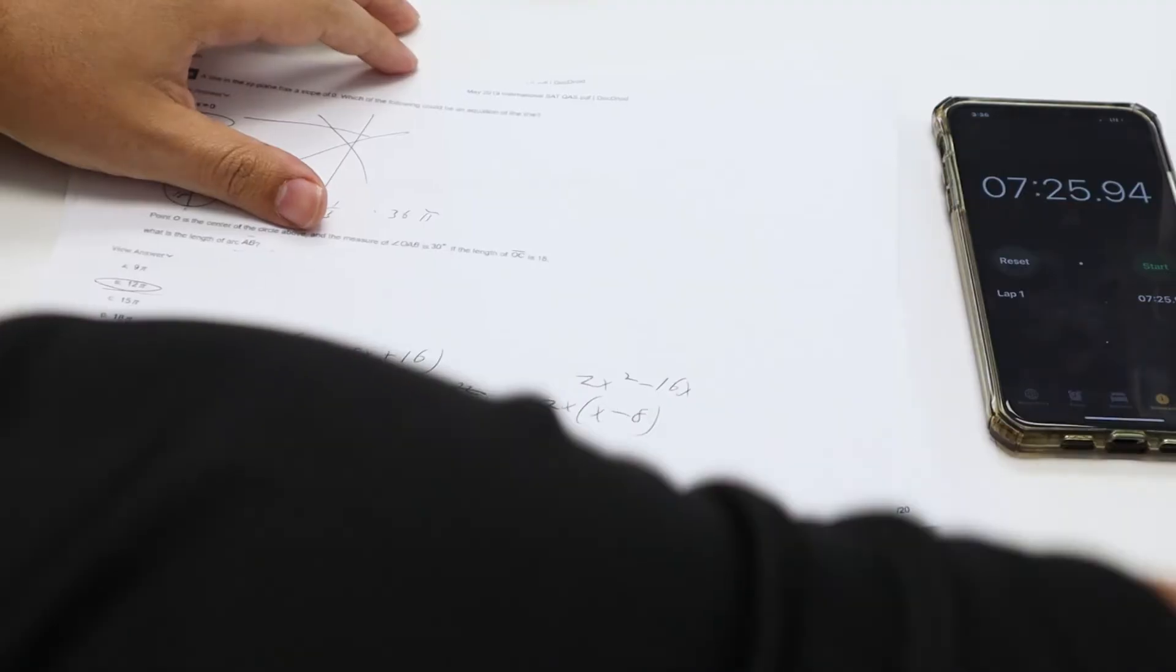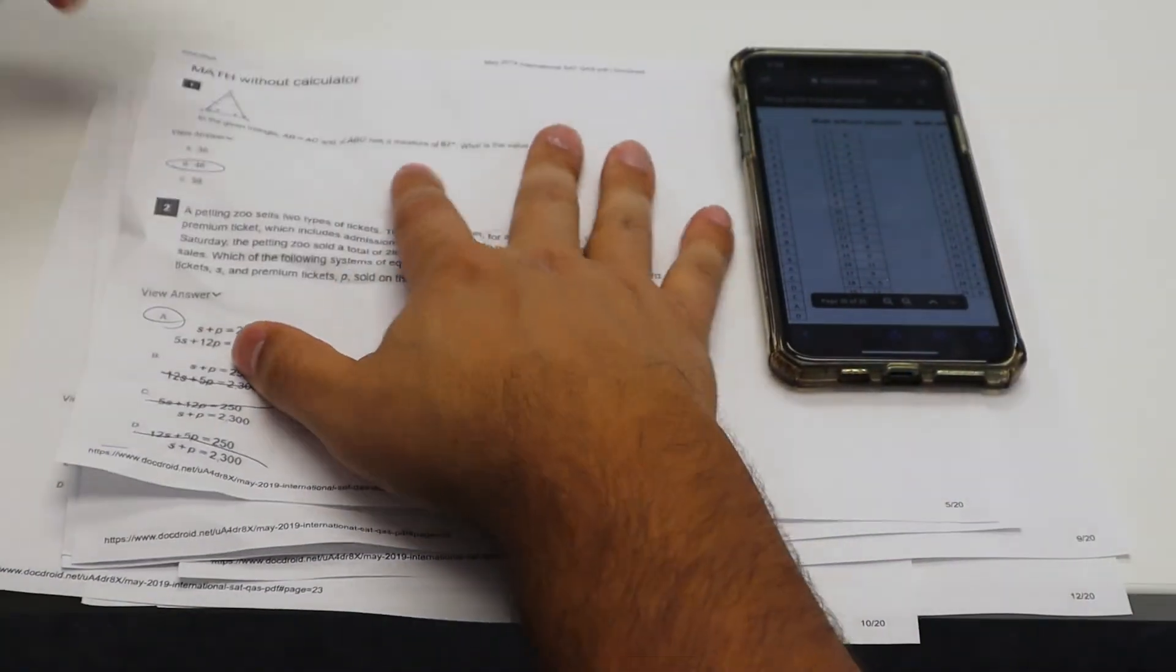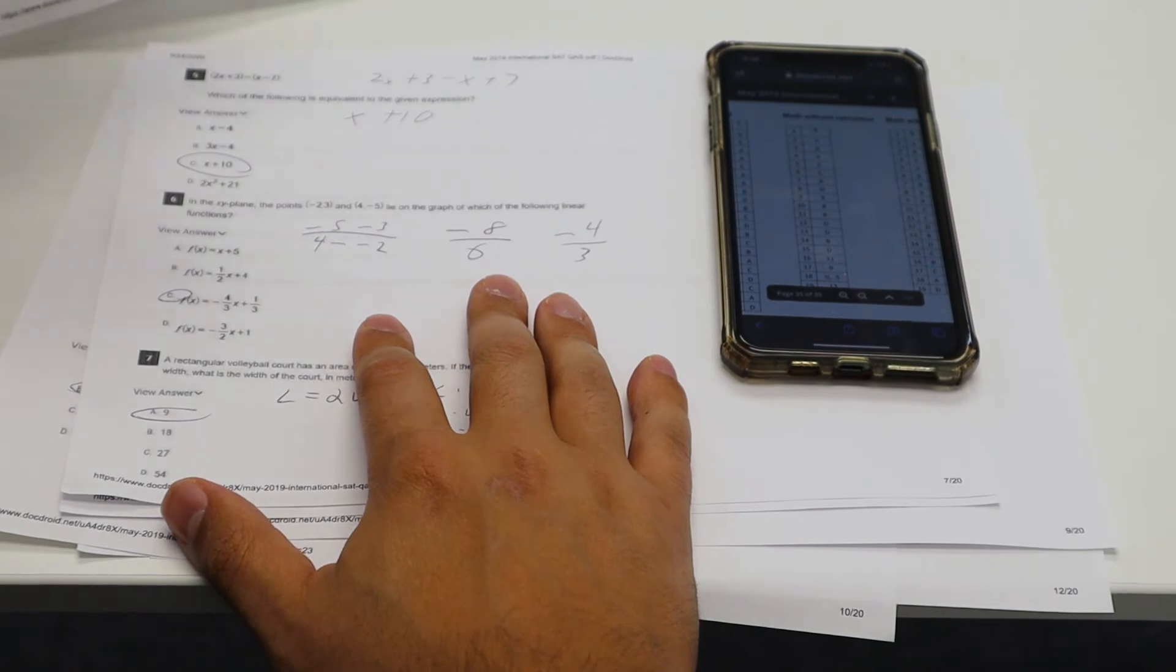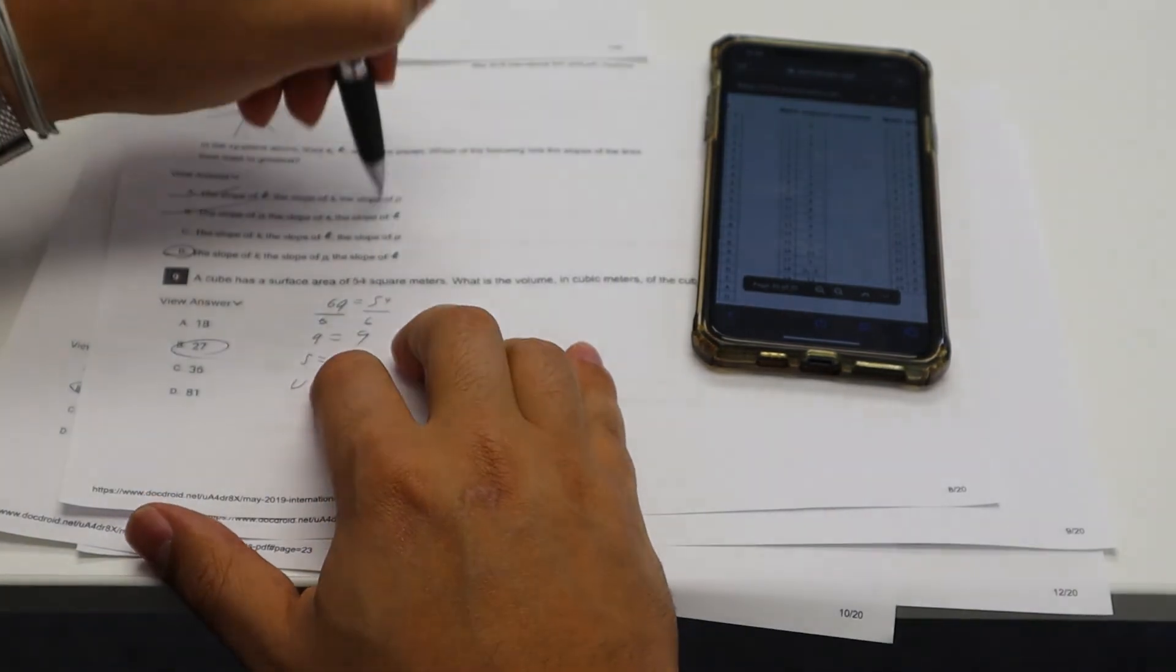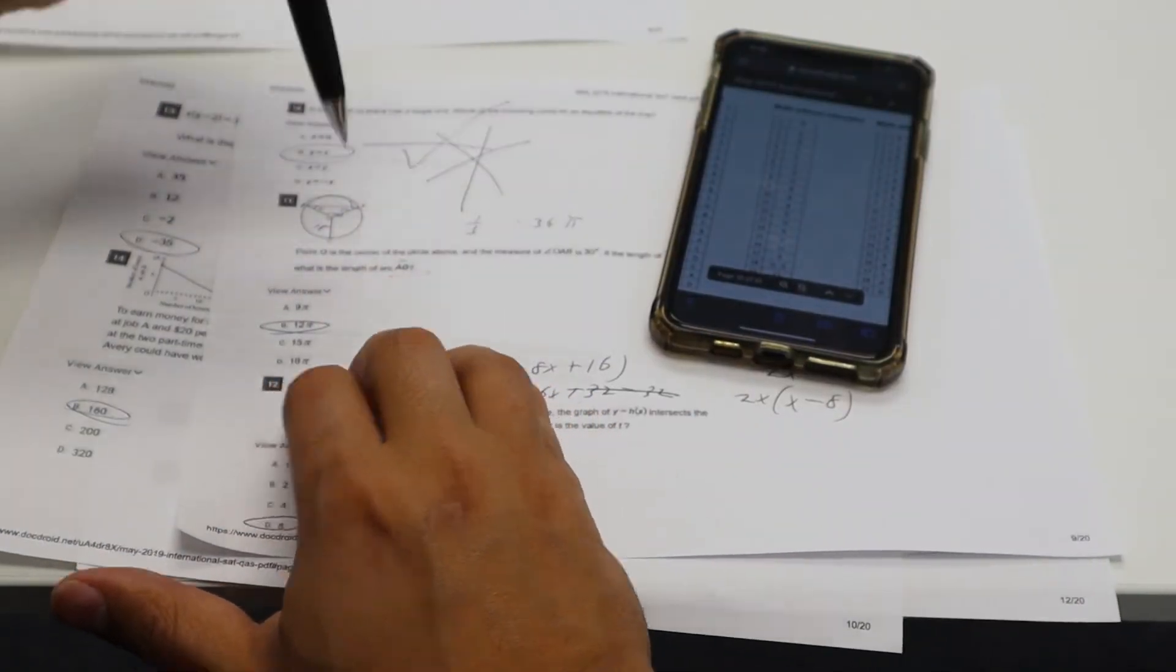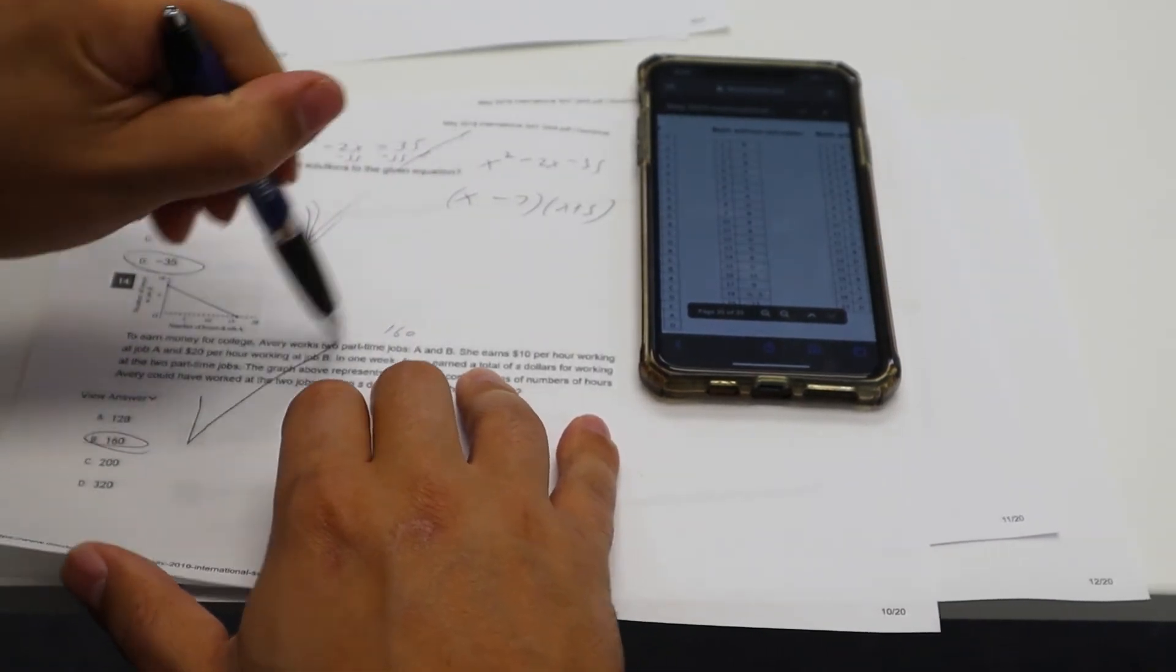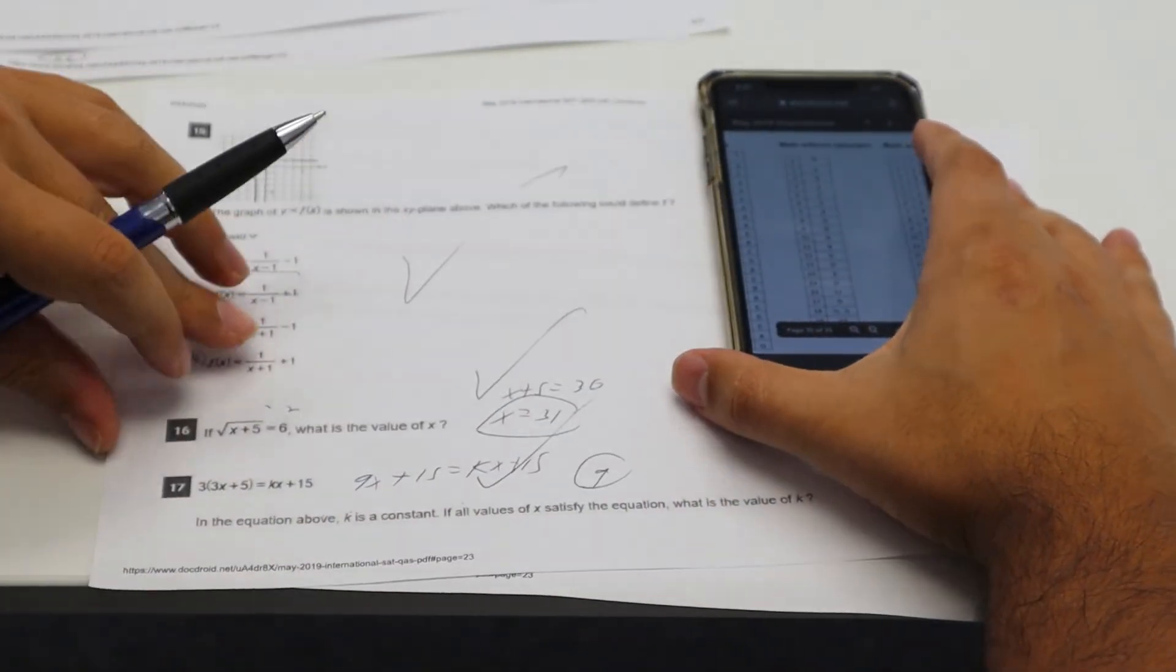All right. So I finished. Let's check my answers. All right. So no idea why I crumpled this. B, A, correct? B, A, correct? C, C, A, correct? D, B, correct? B, B, D, D, D, D, D, D, D, and 31, nine. Let's see. 0.5, 13, and four.